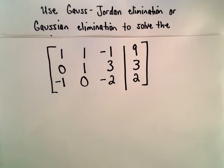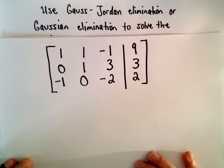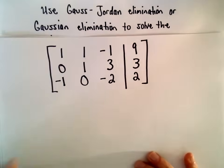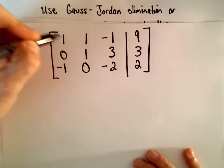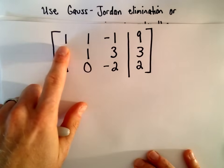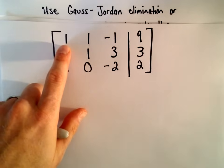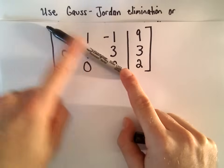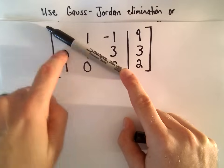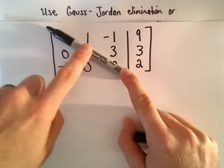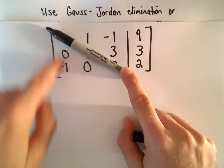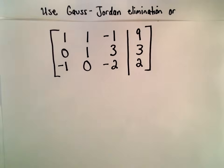Our goal is to write this matrix in row echelon form — that means writing it in triangular form where the leading coefficient in each row is equal to 1. If you look along the diagonal for x, y, z, we're going to make the entries below that into 0s, and we want 1s along the diagonal. Once we do that, we're going to use back substitution to solve.